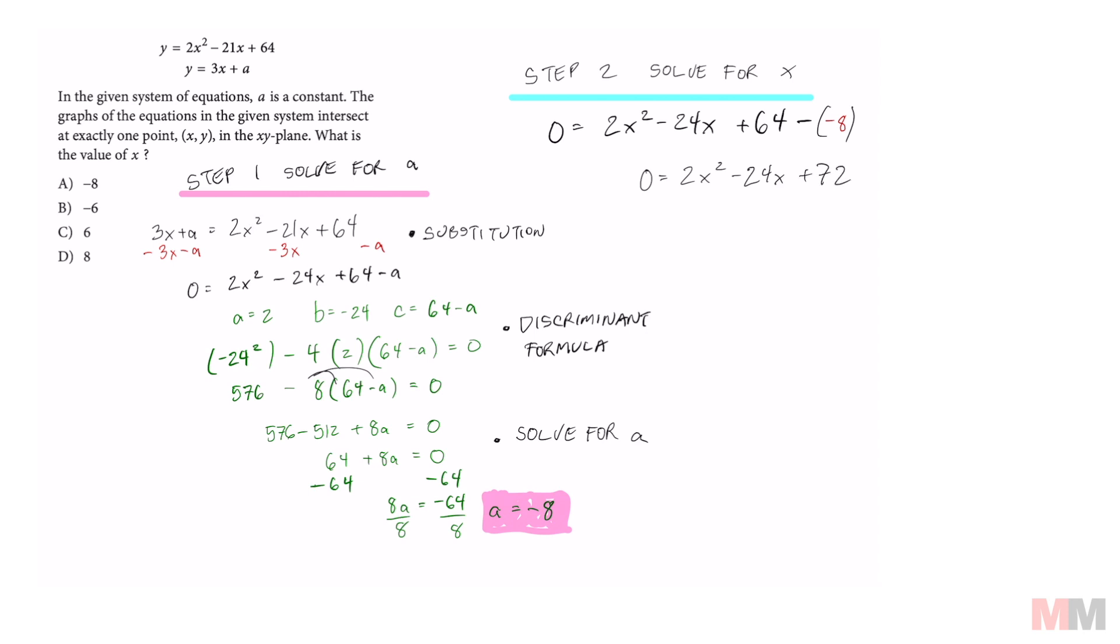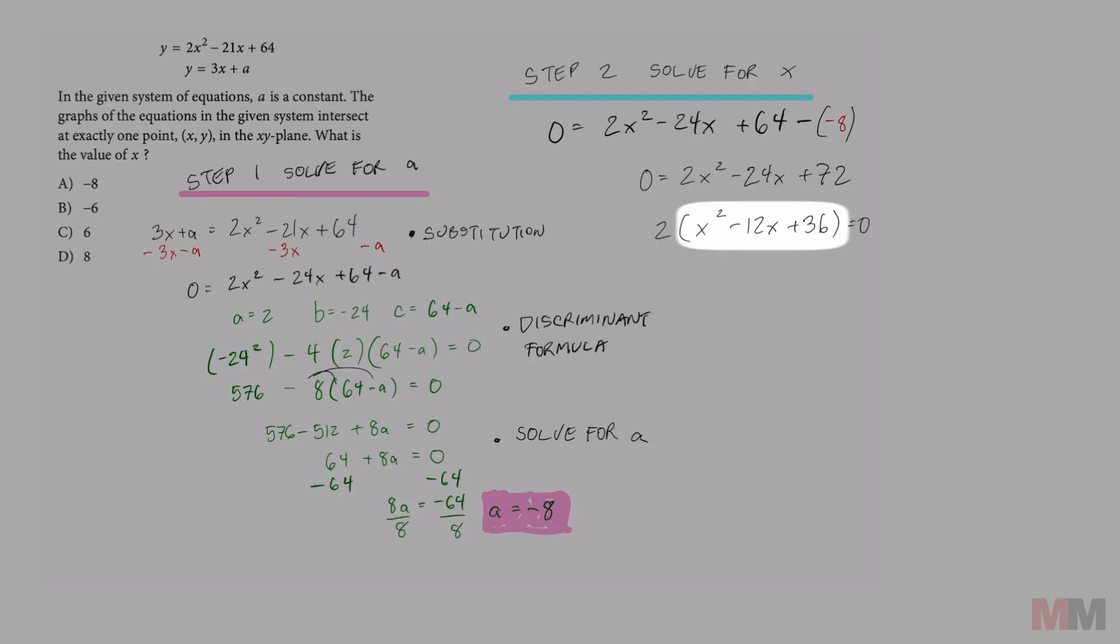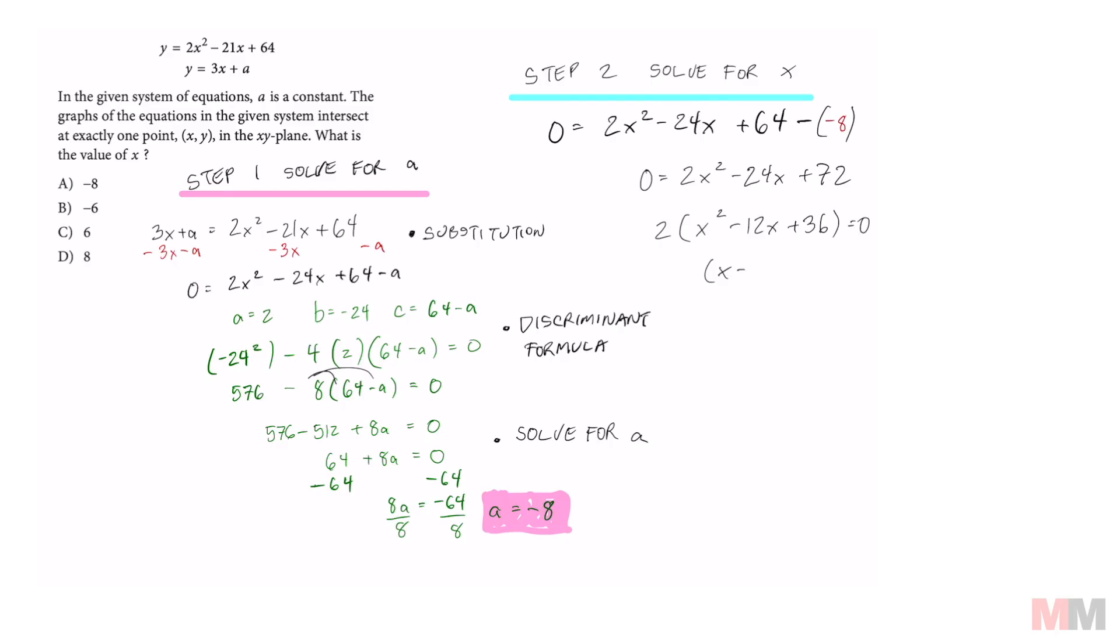And all we have left to do is to factor that out. Make your life easier. Factor out a 2 first. You're going to be left with X squared minus 12X plus 36 equals 0. And that trinomial factors into X minus 6 times X minus 6.